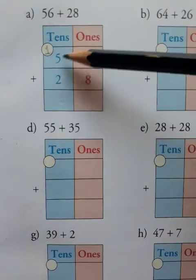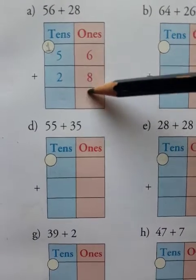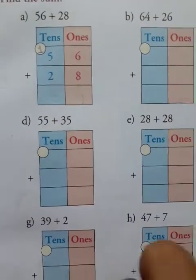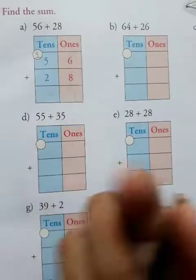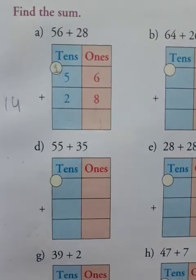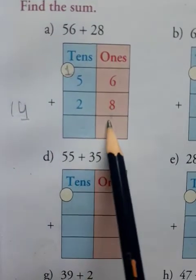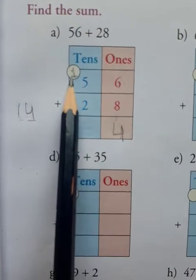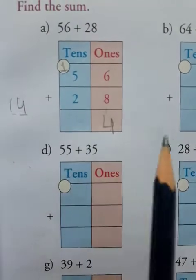First of all, you arrange the numbers like this: 56 and 28. You can see 6 and 8 in the ones place. First of all, you add 6 and 8: 8, 9, 10, 11, 12, 13, and 14. So 8 plus 6 is equal to 14. This 4 is in the ones place, so you write 4 in ones. And this 1 is in the tens place, so you carry over 1 to the tens place.